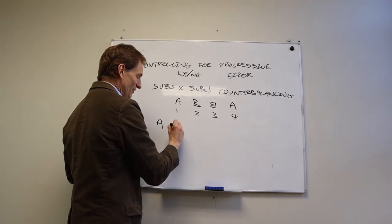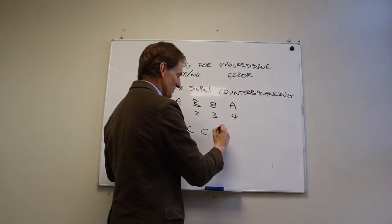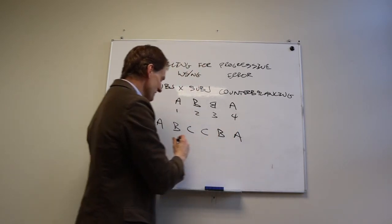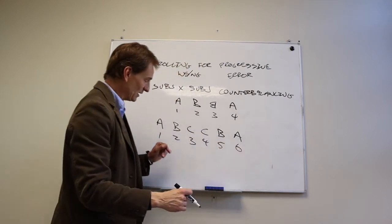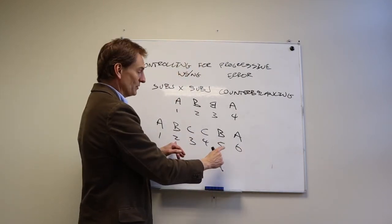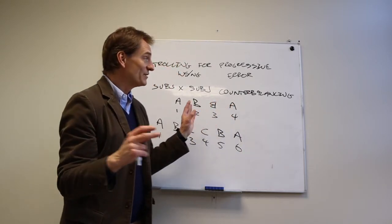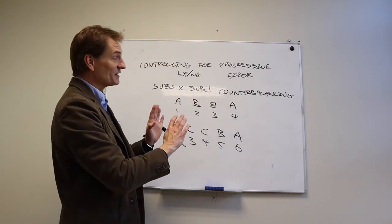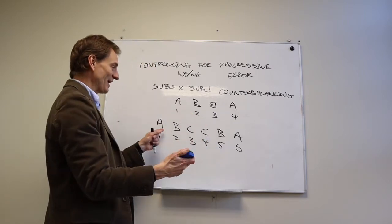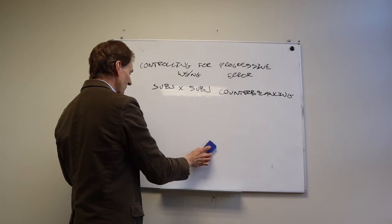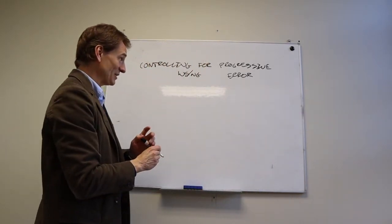Similarly, if you have conditions A, B, C, three different treatment conditions, C, B, A. Same principle, one, two, three, four, five, six. One and six is seven, two and five is seven, three and four is seven. But again, no one runs their research like this because it's utterly insane. People don't want to be in the study for that long anyway, and then you're doubling it. So forget about subject by subject counterbalancing, at least in your own research.